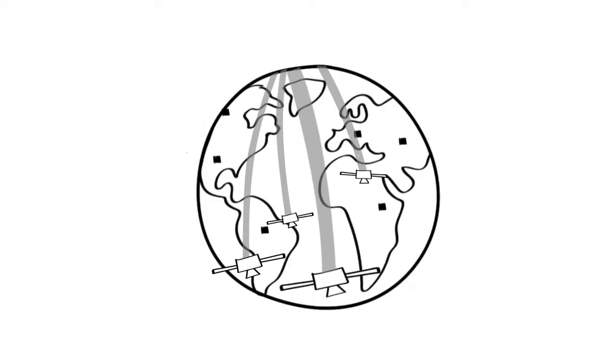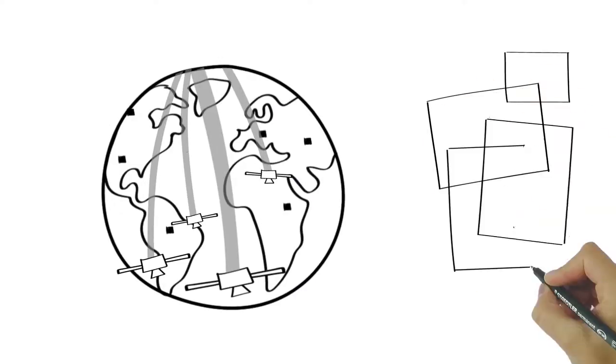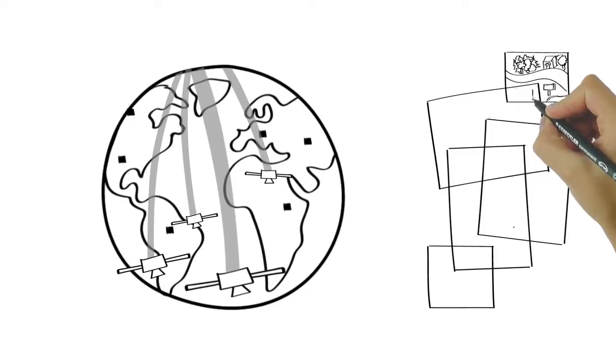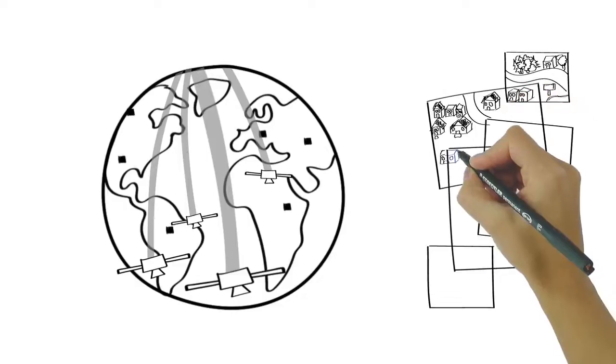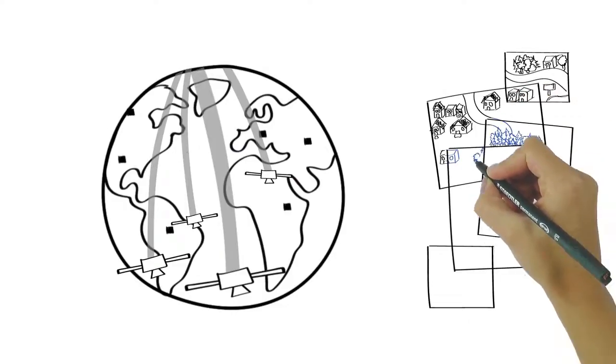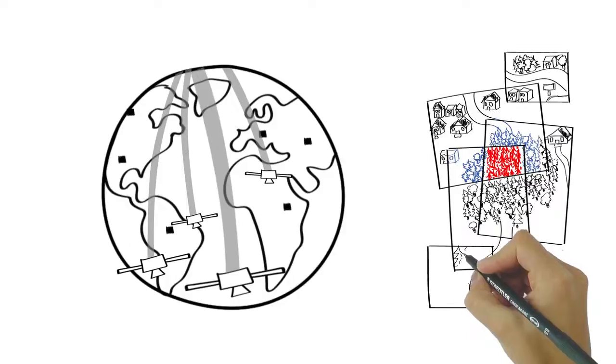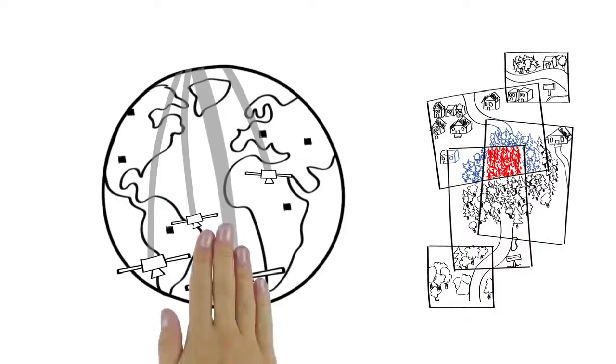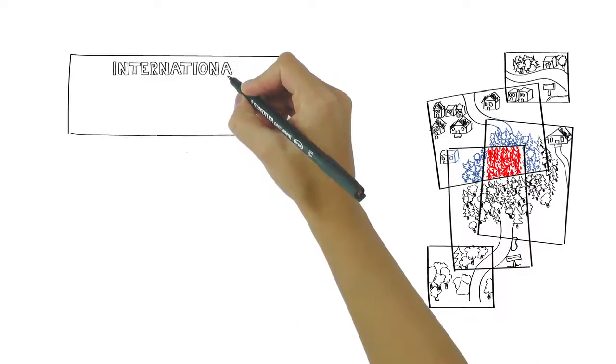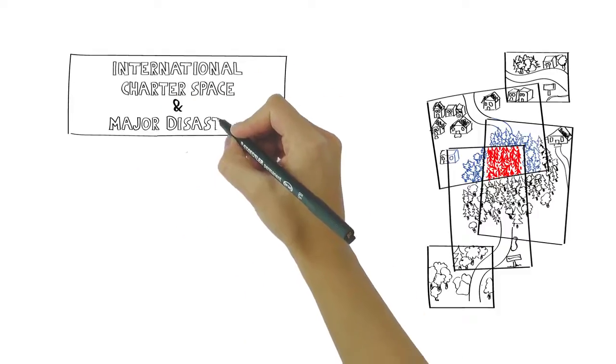But there are many satellites circling our planet, each on a different track and capturing different views of our Earth. The chance of getting the perfect picture of the disaster zone is much higher if rescue teams can combine all of these views and pick the best of them. This is the idea behind the International Charter Space and Major Disasters.